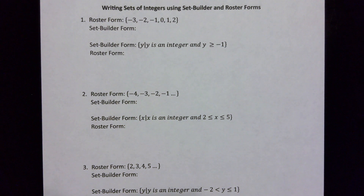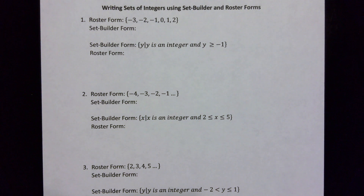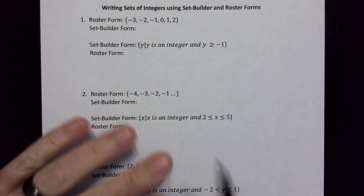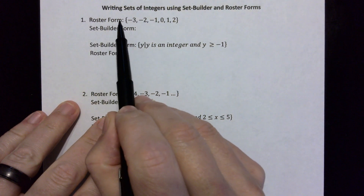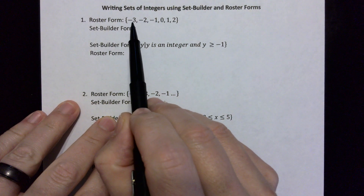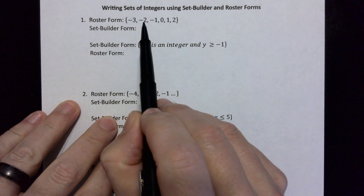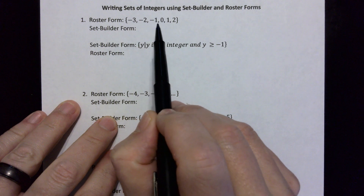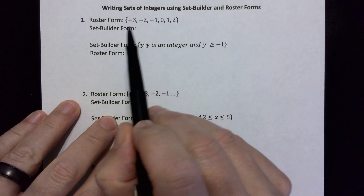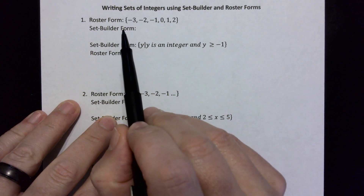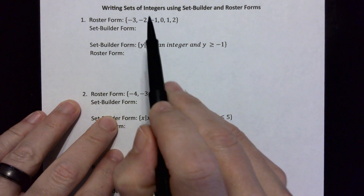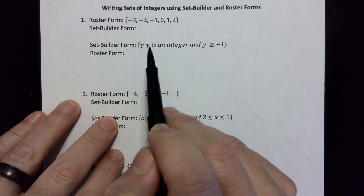In this video we're going to be writing sets of integers using set builder and roster form notation. For the first problem, we have roster form written as negative three, negative two, negative one, zero, one, and two, and we want to write this in set builder form.